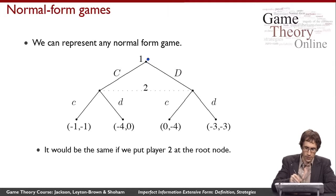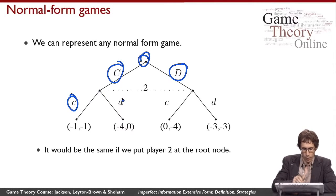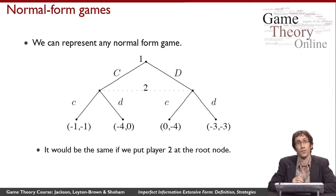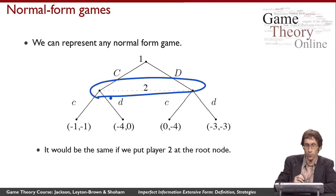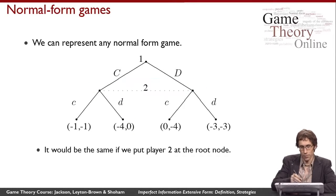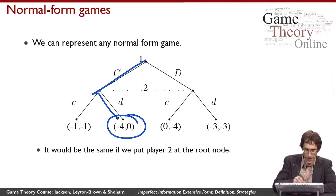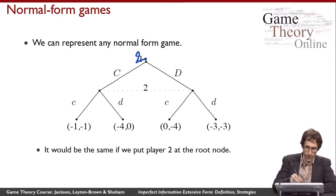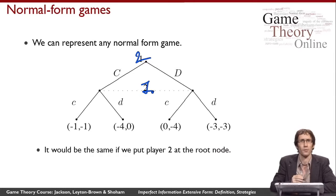Player one first decides whether to cooperate or defect, and then player two decides whether to cooperate or defect. In the prisoner's dilemma, you don't see what the other person chose when you take your own action. Although our game representation has player two moving second, it doesn't really matter because player two isn't informed of what player one did. Once both take their actions, we get a payoff — for example, if they choose C and D, we get the corresponding payoff from the game matrix. We could equally put player two at the root node, since time isn't really playing a role in this game.